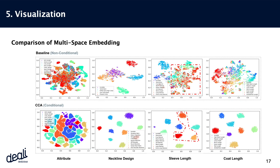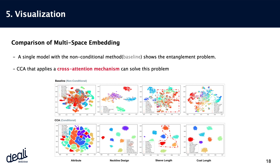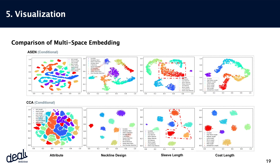This figure shows the TSNE visualizations of multi-space embeddings from both the baseline model without condition and the CCA model. When we compare the two models, it becomes evident that CCA excels in shaping the embedding space without entanglement. These results compare our method with the previous state-of-the-art model ASEN, highlighting the excellence of our approach.